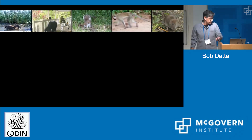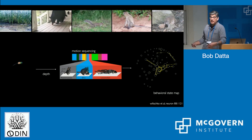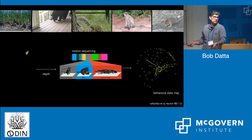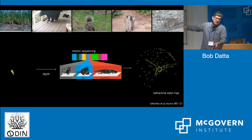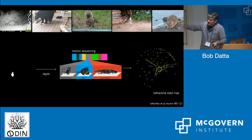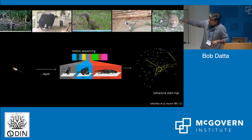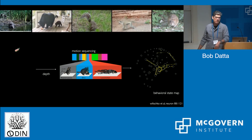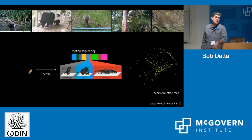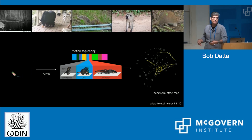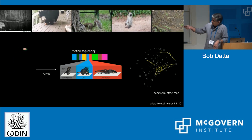To that end, for the past several years, we've been developing tools that let us characterize in the laboratory the spontaneous or naturalistic behavior of rodents. We take advantage of depth cameras that are capable of seeing mice in 3D. This is a mouse running around in a cheap bucket, and we're imaging it with a depth camera. Heat mapped over each pixel of this mouse is its height at any given point, so you can really capture the three-dimensional pose dynamics of animals in this setting.